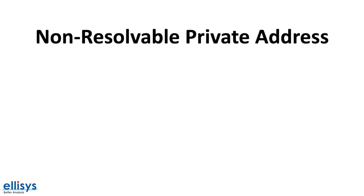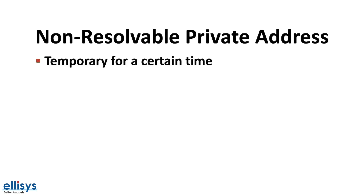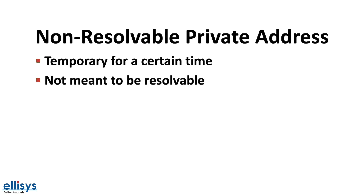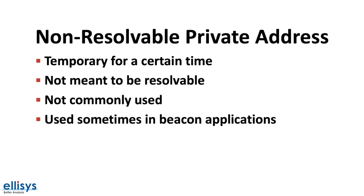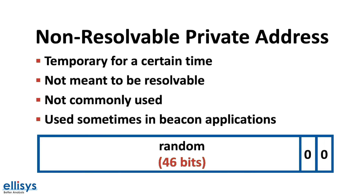The other type of random private address is the non-resolvable private address. This type also changes periodically, but unlike resolvable private addresses it cannot be resolved and is meant to prevent identity tracking by any other Bluetooth device. It is not common but is sometimes used in beacon applications. A non-resolvable private address is made up of two zeros in the most significant bits and the remaining 46 bits are chosen at random.